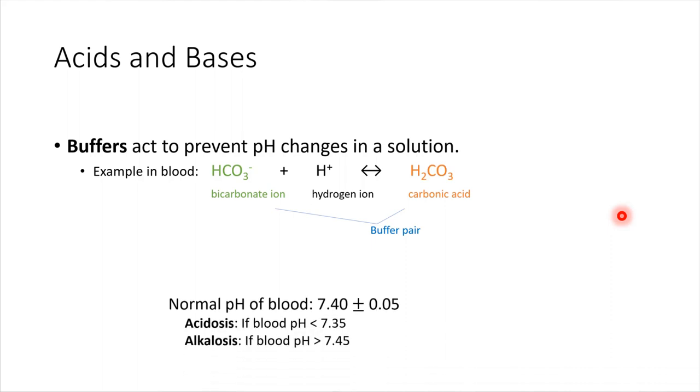So pH ordinarily of blood is just a little bit on the basic side. 7.4 is normal, give or take 0.05. And so if the pH goes outside of that range, if it drops below 7.35 or above 7.45, this buffer is one of the first things that will kick into play and help to maintain the normal pH of the blood. We'll come back to that more when we talk about the respiratory system, which is very heavily tied into this.